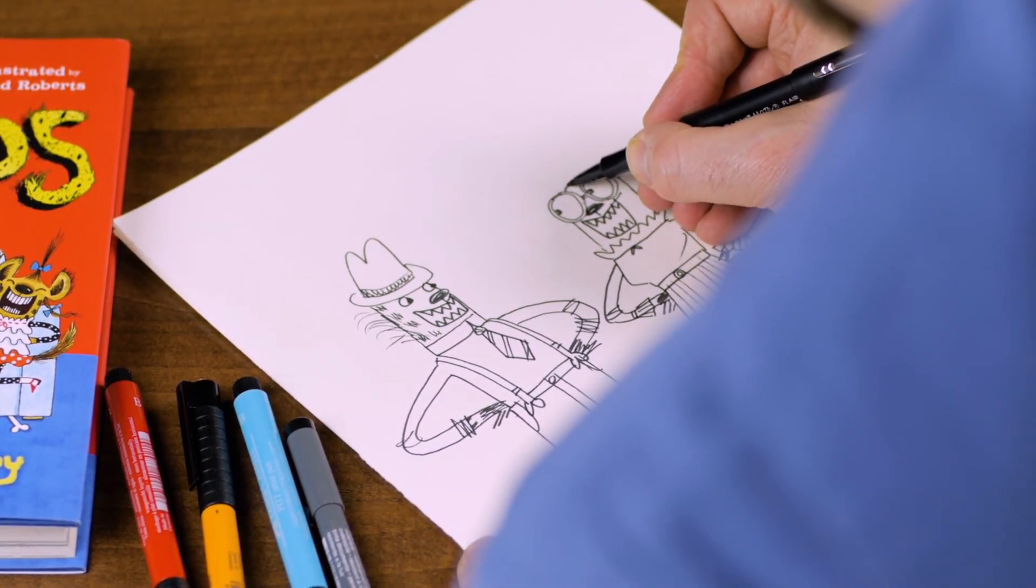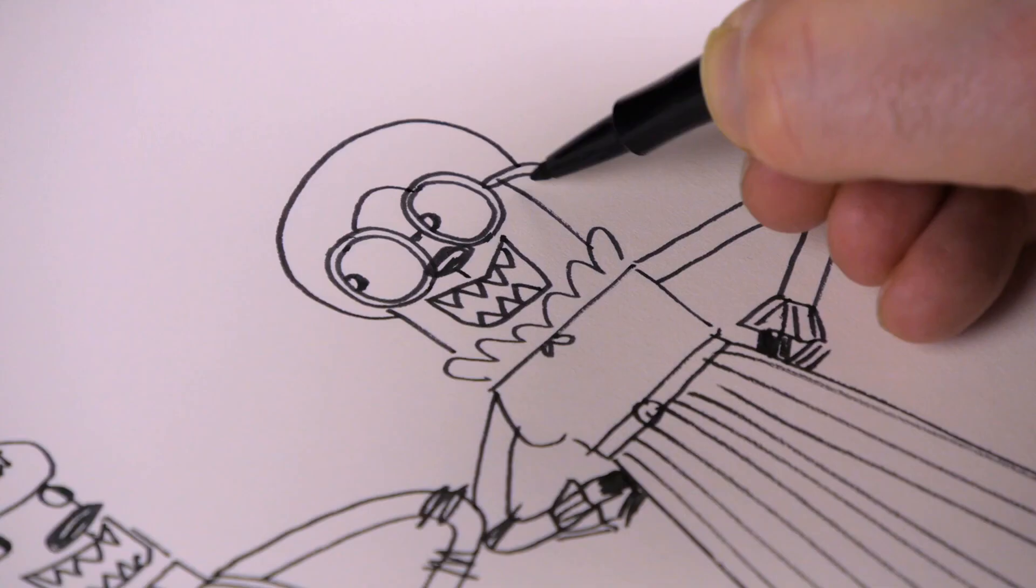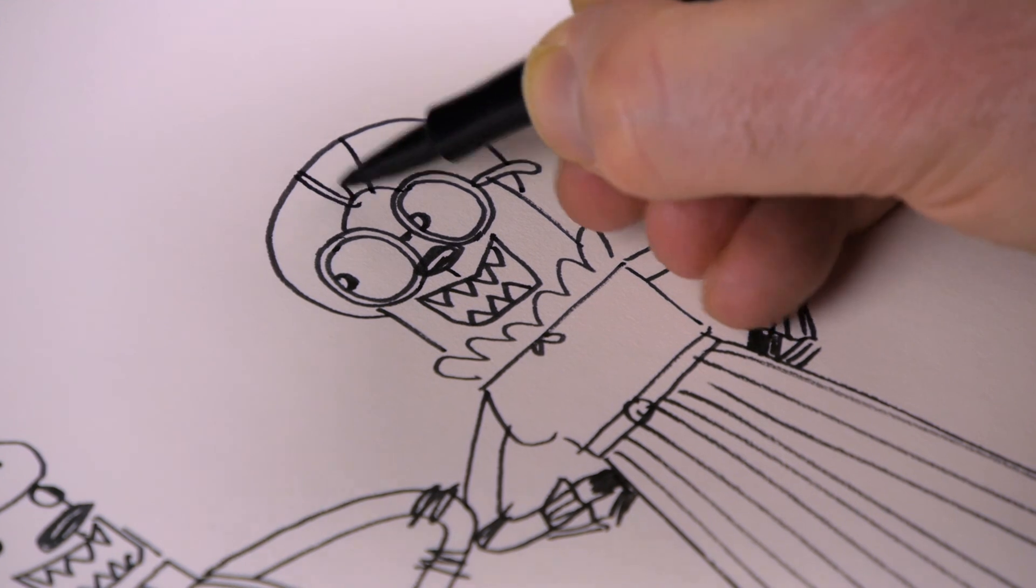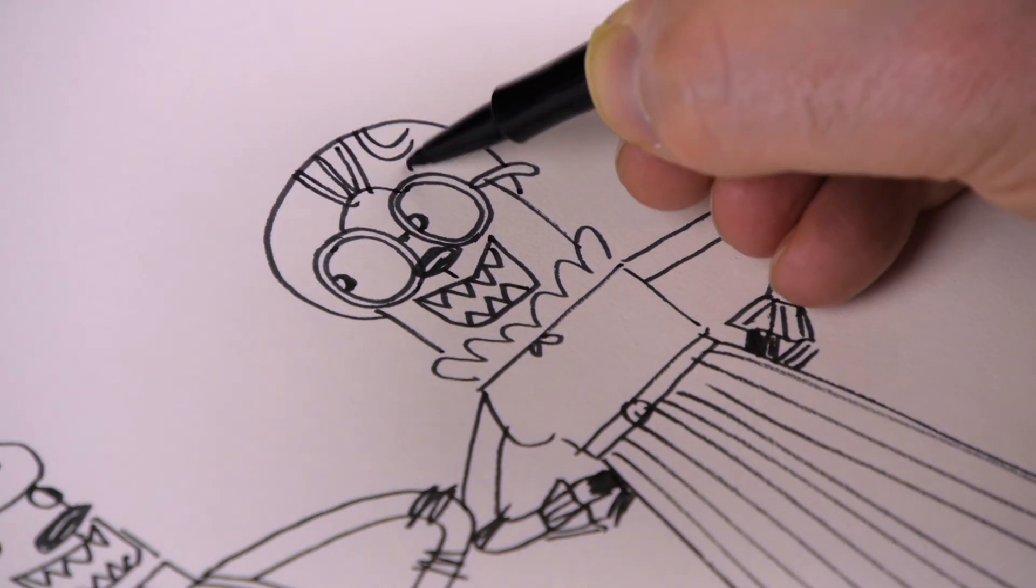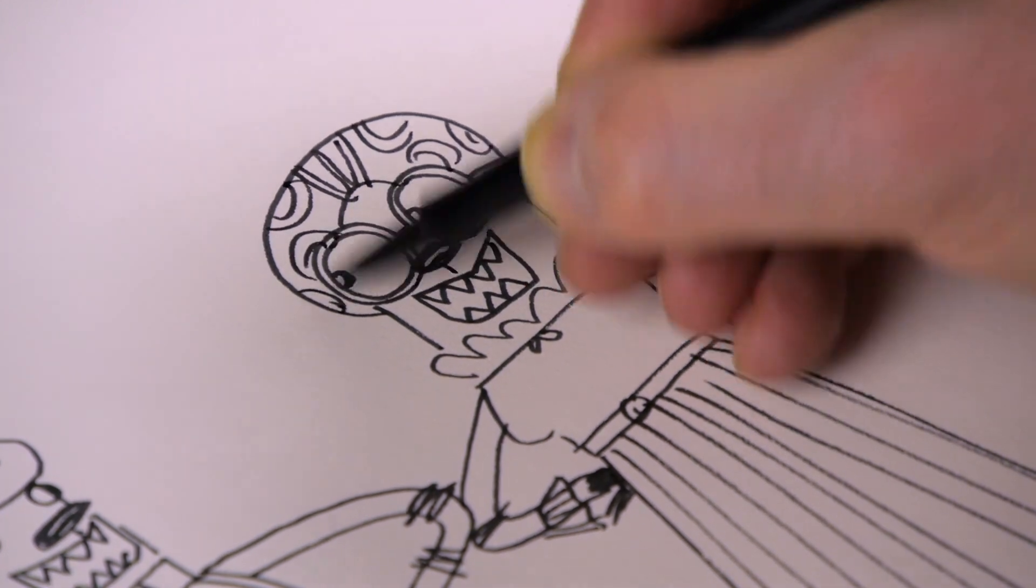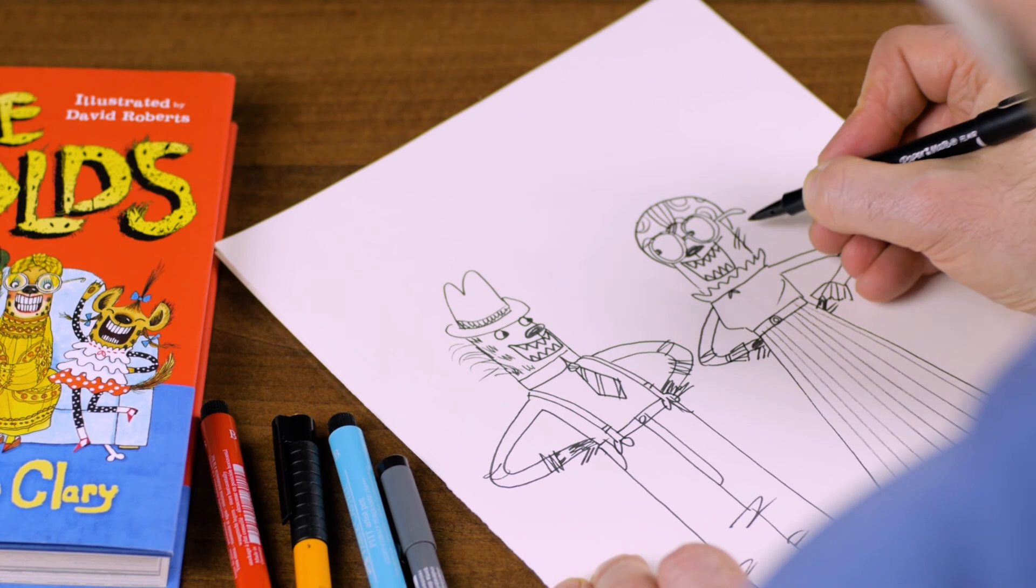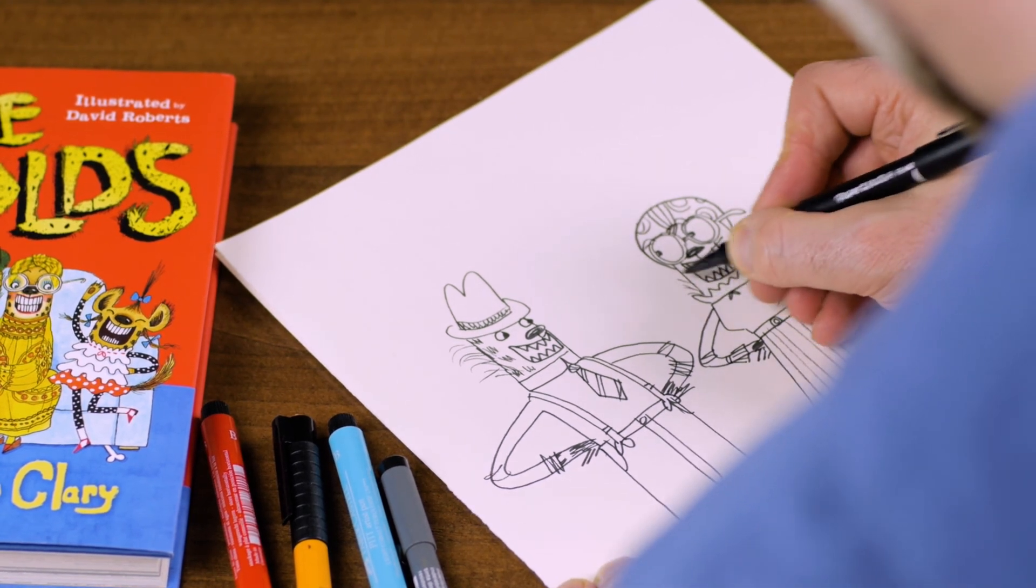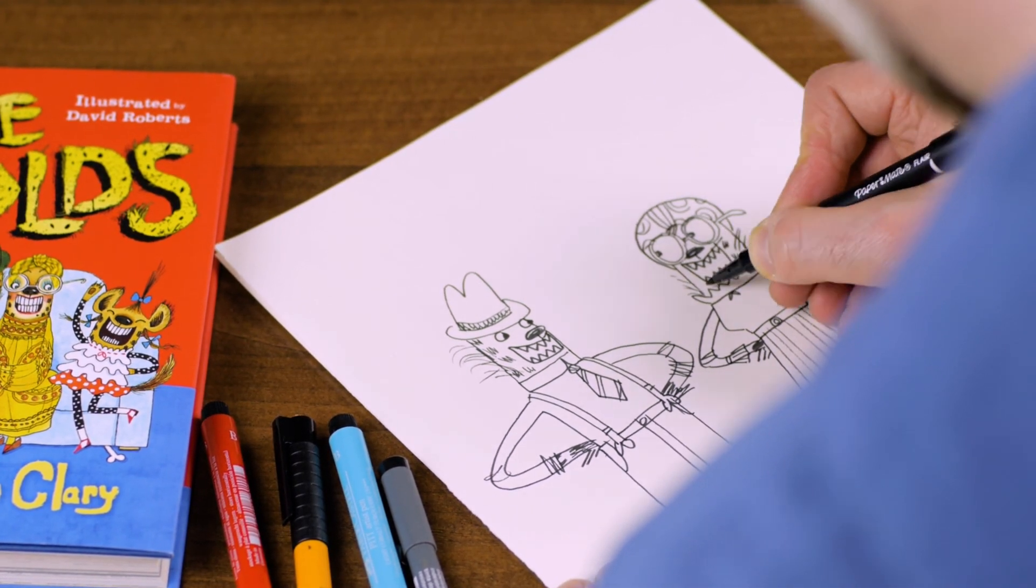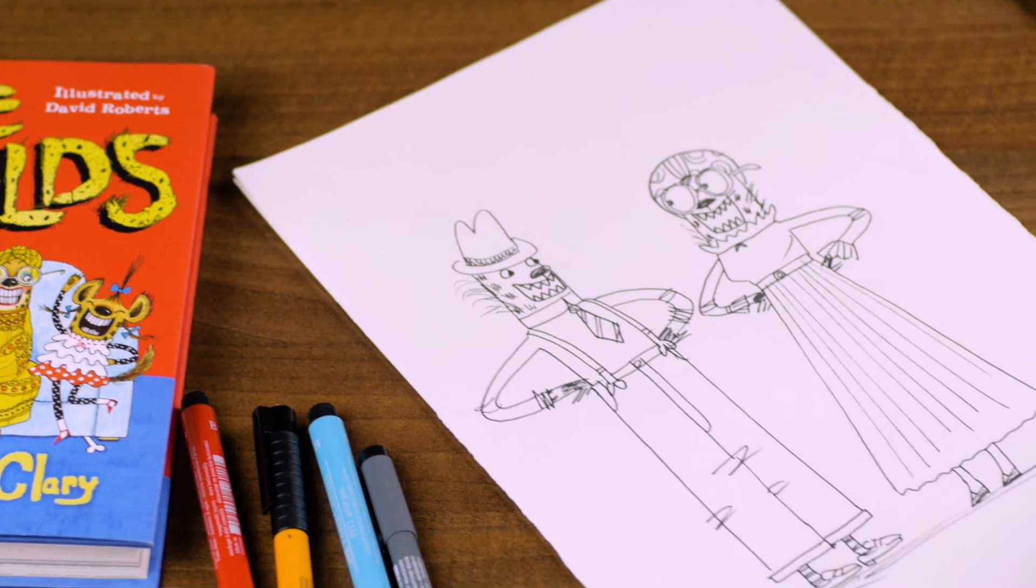And then we just put... Mrs. Bold loves wearing hats. So she's got a nice turban style hat on in this picture. We'll put a nice pattern on that. And a little bit of hair coming across. A bit of fur. And a few spots. There we go. Mr. and Mrs. Bold.